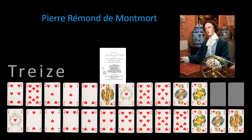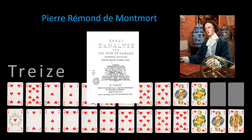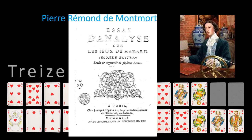In 1713 he wrote the book, or actually the second edition of the book, Essai d'Analyse sur les jeux d'azard, in which, amongst other things, he presented the solution to the derangement counting problem.